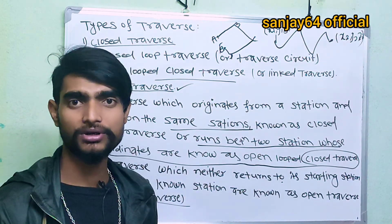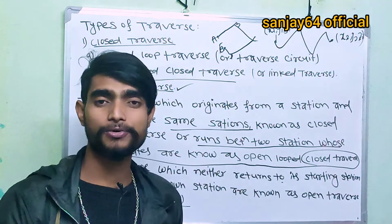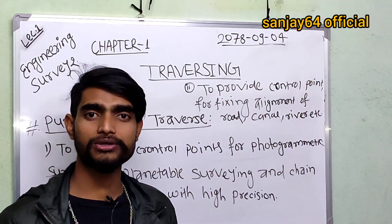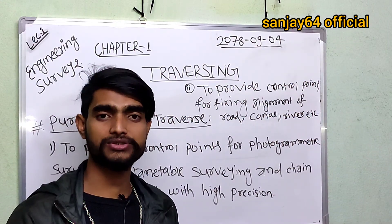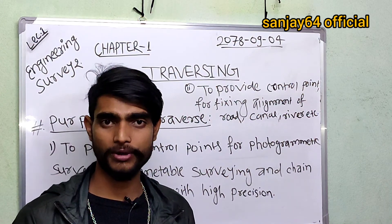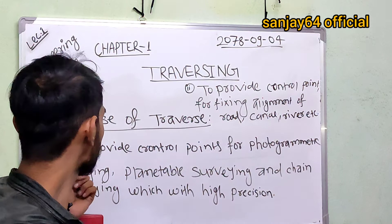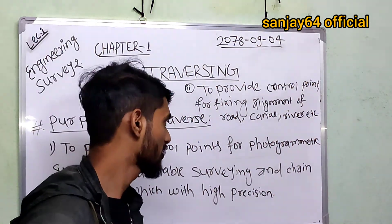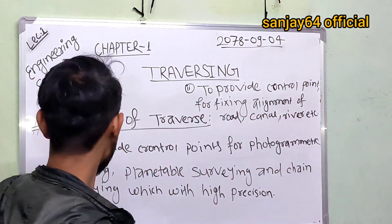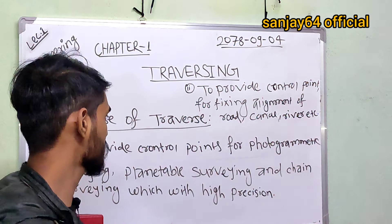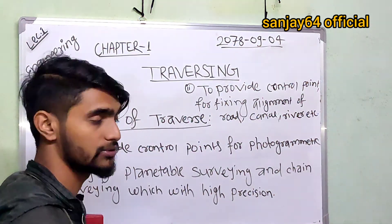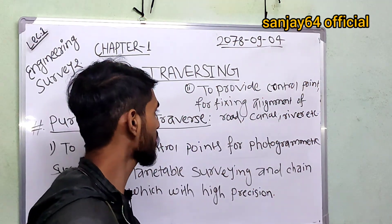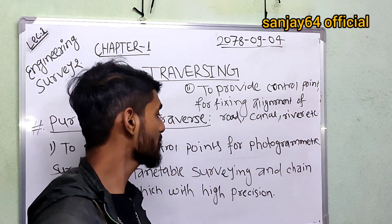The main purpose of traversing is to provide control points for photogrammetric surveying, plane table surveying, and theodolite surveying with high precision. It is also used to locate and profile alignments, and to provide control points for fixing the alignment of roads, canals, and rivers.